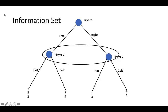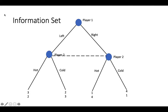One way to draw an information set is to draw a circle around the nodes that a player cannot distinguish. In this game, if we want to represent the fact that player 1 and player 2 move at the same time, then we need to illustrate the fact that player 2 doesn't know whether player 1 has chosen left or right when player 2 makes their decision. We can do that by drawing a circle around both of player 2's nodes, which indicates player 2 doesn't know which node they are at. Another way to illustrate an information set is to connect all of the nodes in the information set using a dotted line.